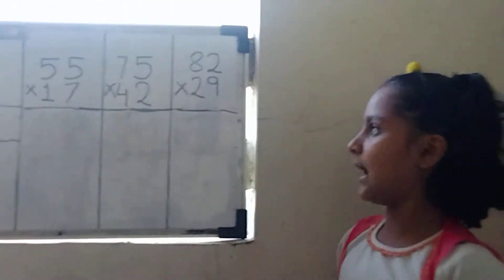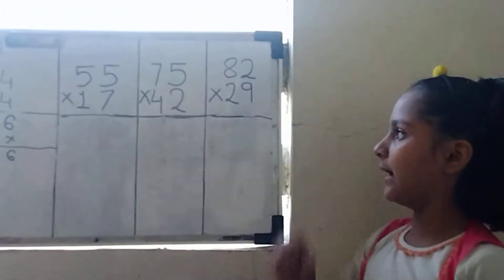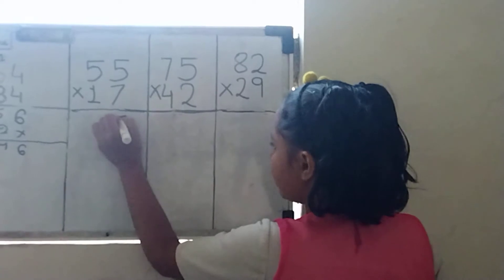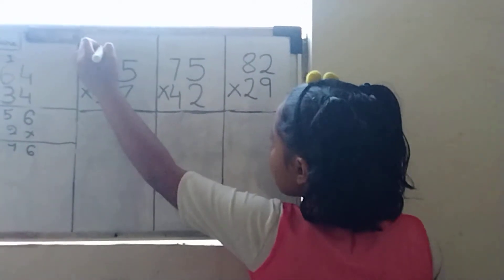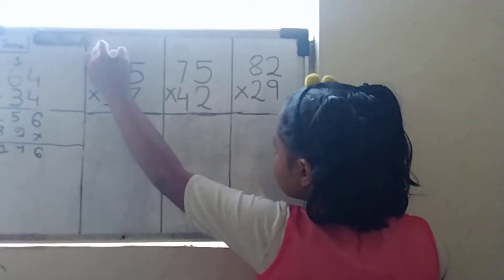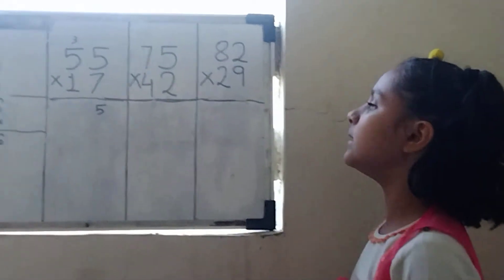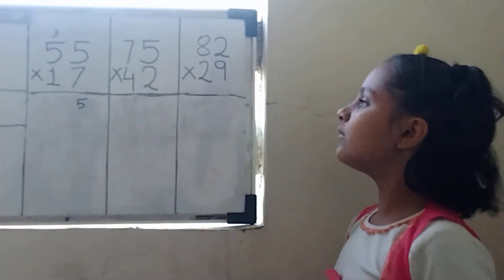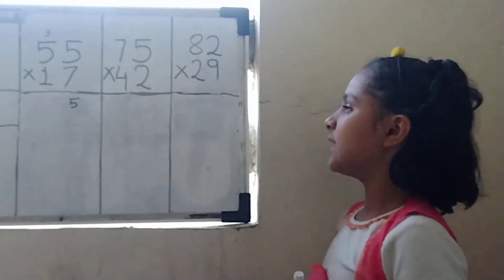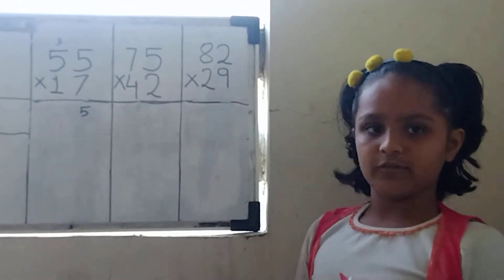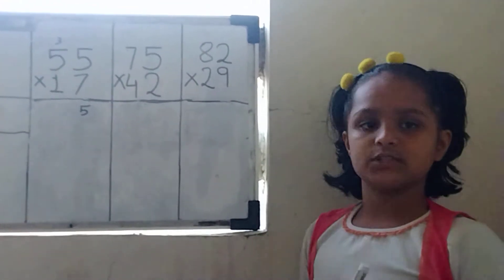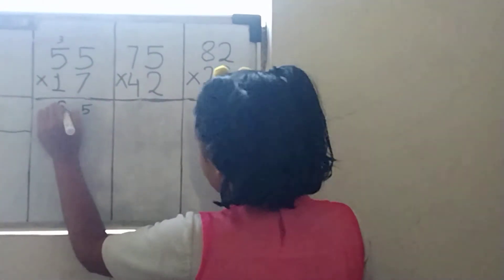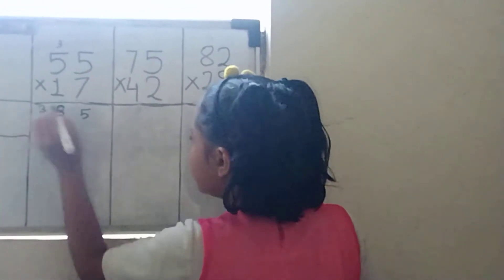Now we will multiply 7 multiplied by 5 equals to 35. We will write 5 here and 3 will be carried over. Then we will multiply 7 multiplied by 5 equals to 35. Then 5 plus 3 equals to 38. Then we will write 8 here and 3 will be carried here.